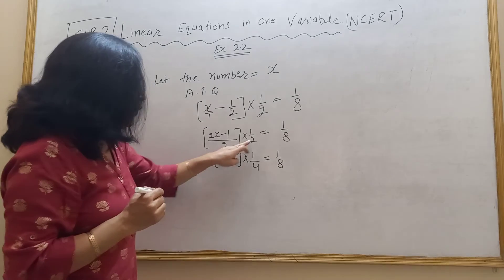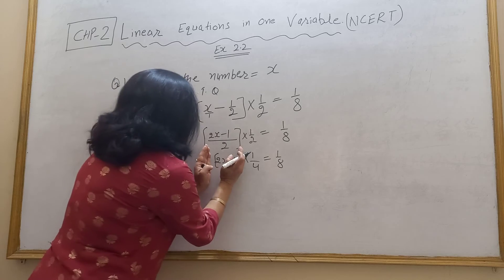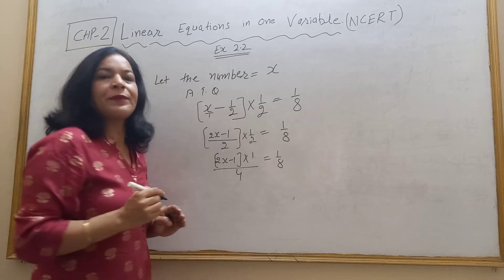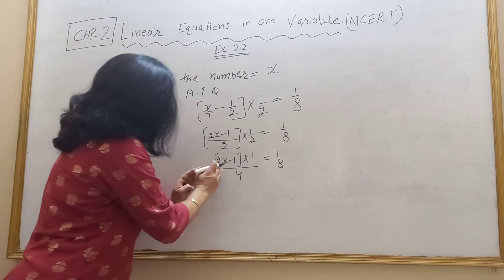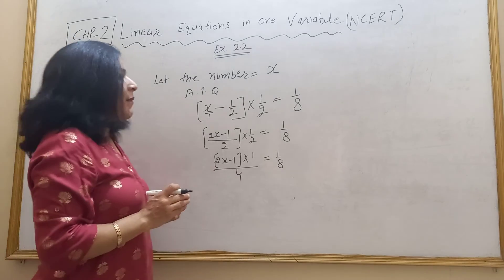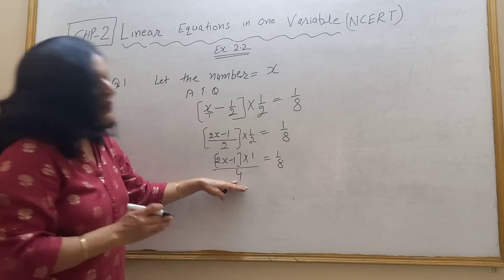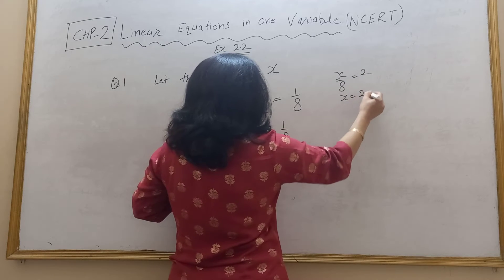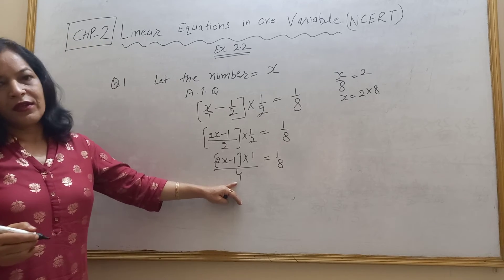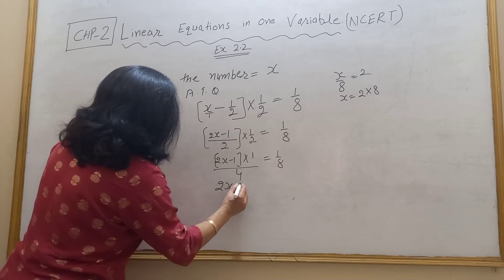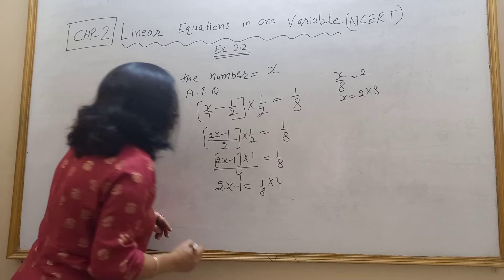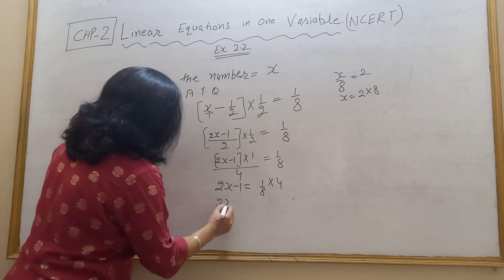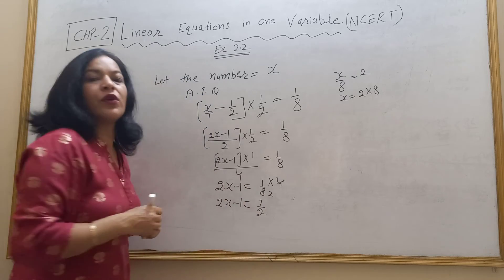Clear? 2 into 2, 4. Now 2 into 2, 4, this one and this one. 4 doesn't mean it separate, you can multiply. So 4 and 8 cancel. If you subtract 1 by 8 into 4, so 4 and 8 cancel. So 2x minus 1 is equal to 1 upon 2.